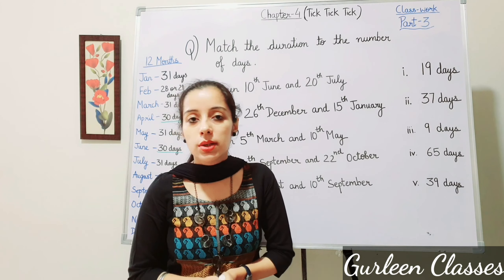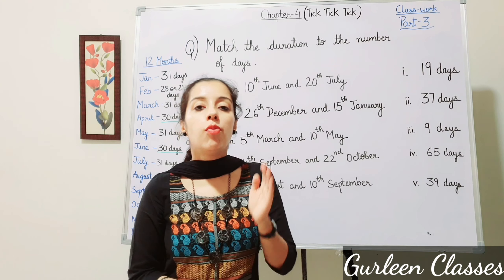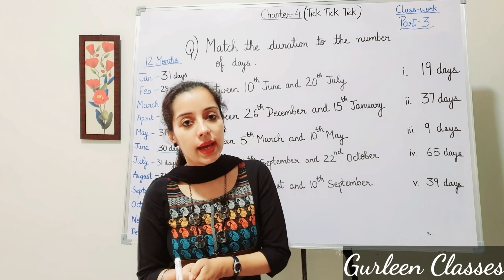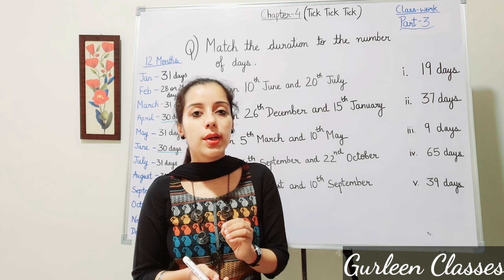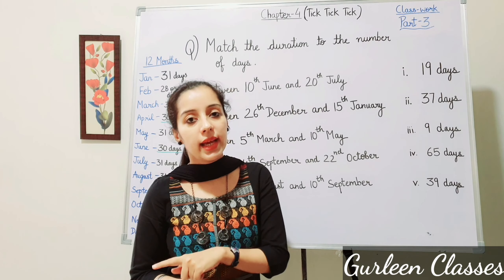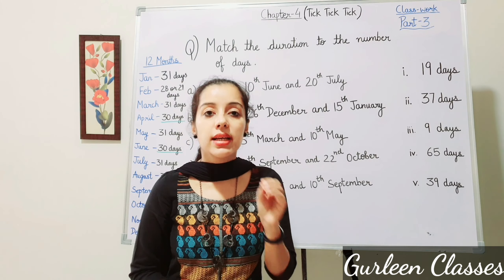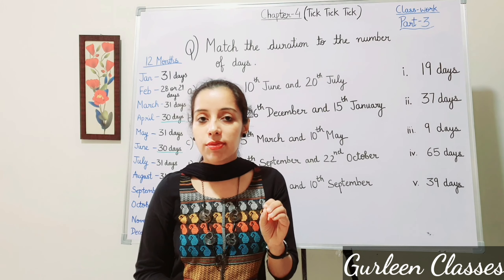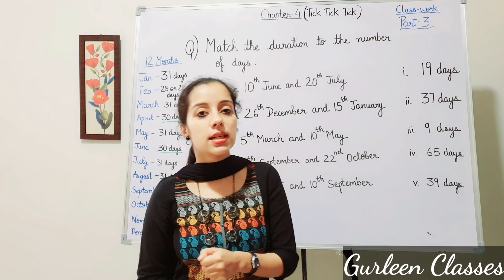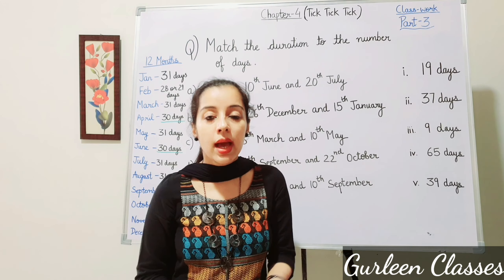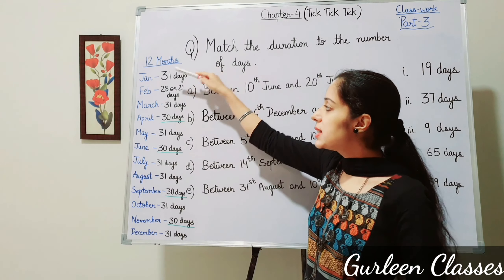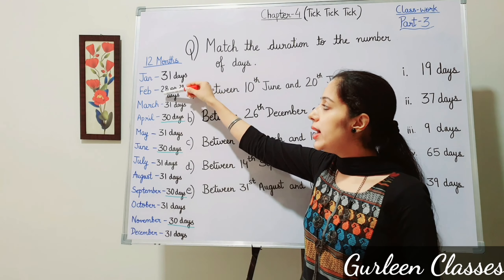Now let us start the new topic: Weeks, Days and Months. One year is equal to 12 months, one year is equal to 365 days, and one week is equal to 7 days. The seven days of the week are: Sunday, Monday, Tuesday, Wednesday, Thursday, Friday, Saturday. There are 12 months in a year.